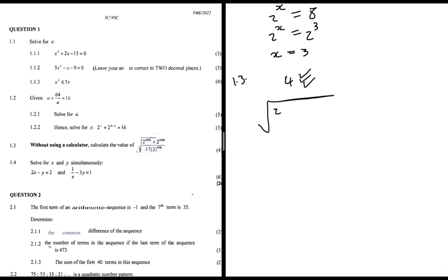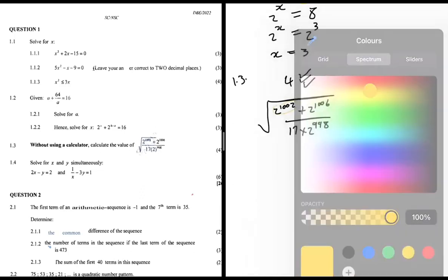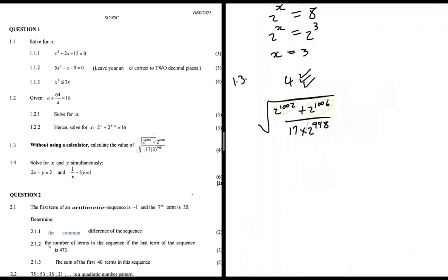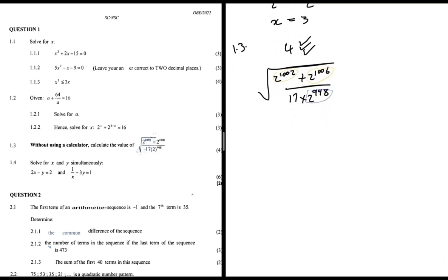We have √((2^1002 + 2^1006) / (17 × 2^998)). I want to factor out 2^998 from the numerator so it cancels with 2^998 in the denominator. Taking 2^998 as a common factor from the numerator leaves 2^(1002-998) + 2^(1006-998) = 2⁴ + 2⁸.